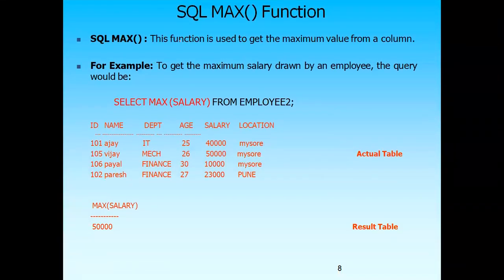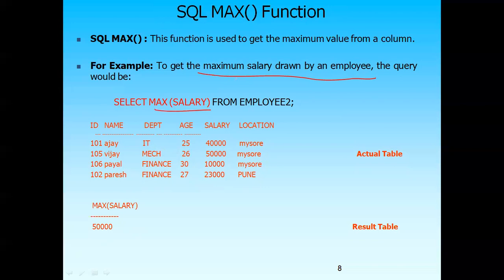The MAX function is used to get the maximum value from a column. To get the maximum salary drawn by an employee, the query is: SELECT MAX(salary) FROM employee. The result returns the highest salary from the table — in this case, the second record has the maximum salary, so MAX returns that value.